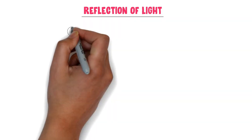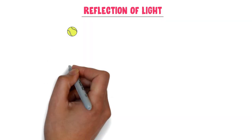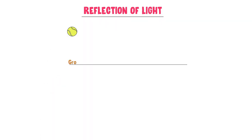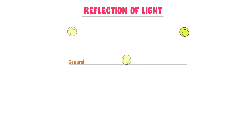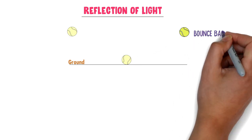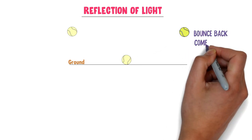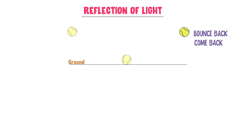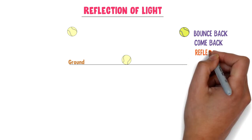What is reflection of light? Consider a ball. When you throw a ball and it hits the ground or any surface, it bounces back or comes back — we say that it is reflected.